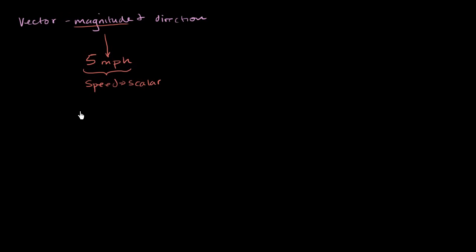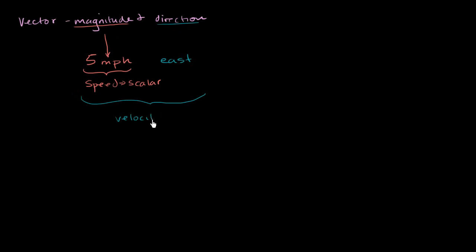If we want it to be a vector, we would also have to specify the direction. So for example, someone might say it's moving 5 miles per hour due east. So now this combined — 5 miles per hour due east — this is a vector quantity. And now we wouldn't call it speed anymore; we would call it velocity. Velocity is a vector: we're specifying the magnitude, 5 miles per hour, and the direction, east.